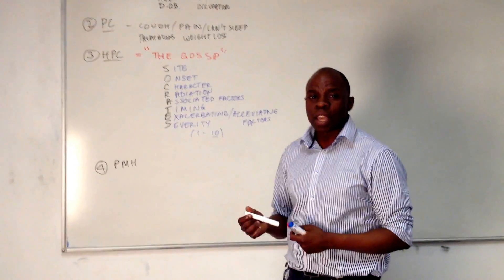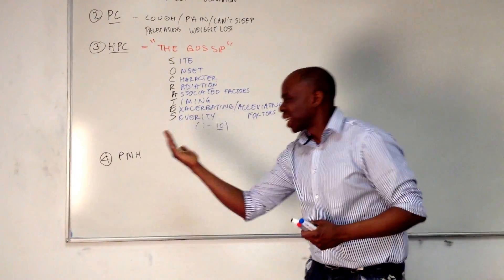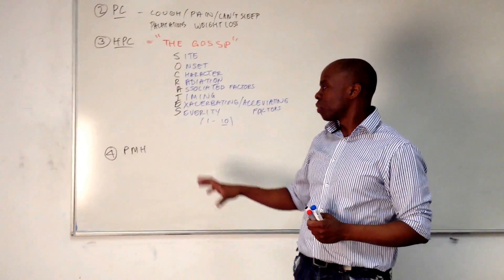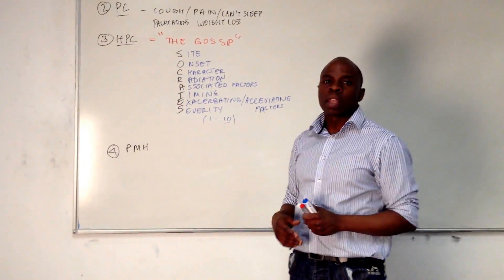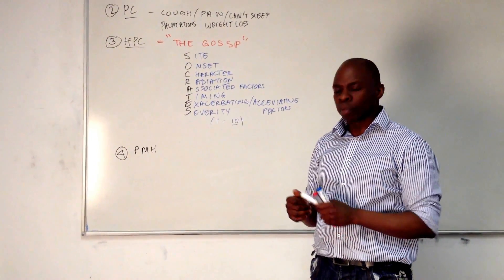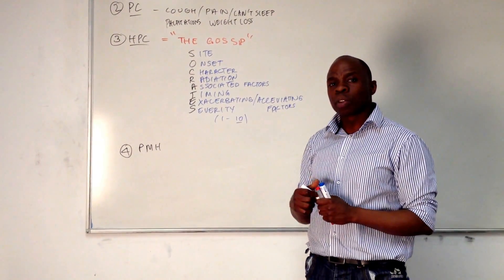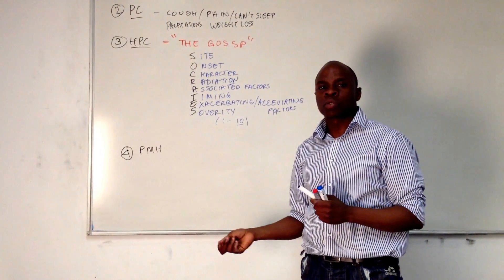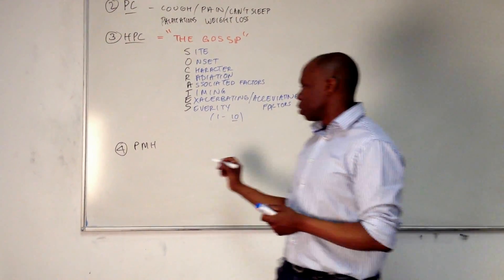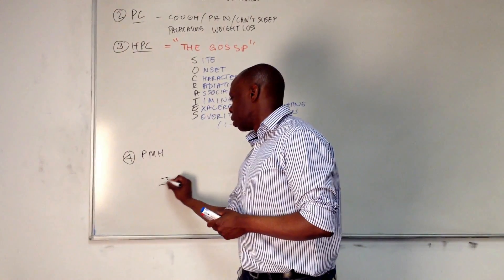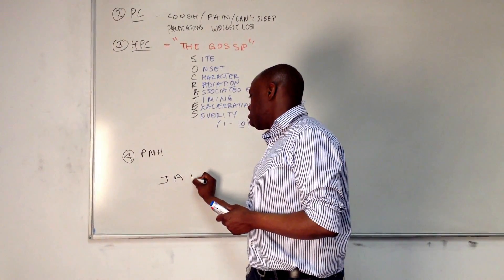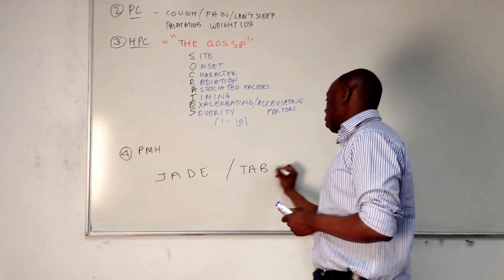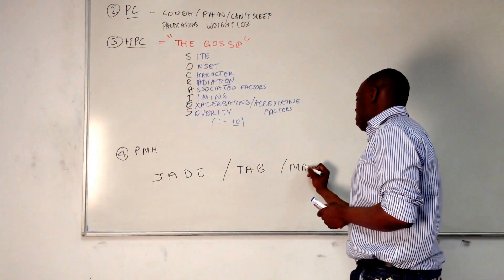The next thing you want to be talking about is a catch-all, like a sweep to catch everything. After you've asked all these questions in their past medical history about any problems they've had before, I normally use this mnemonic: JADE, TAB, MARCH.